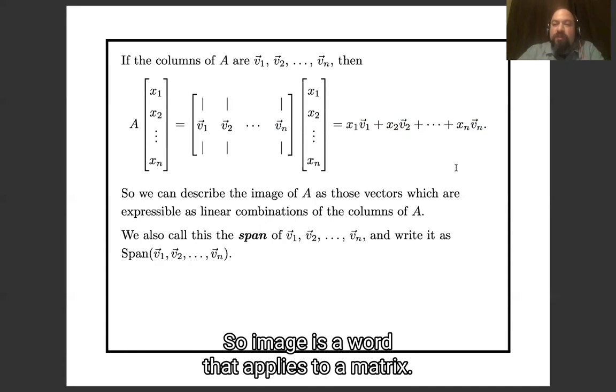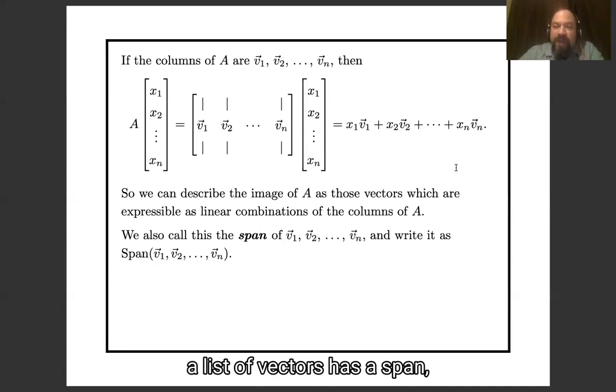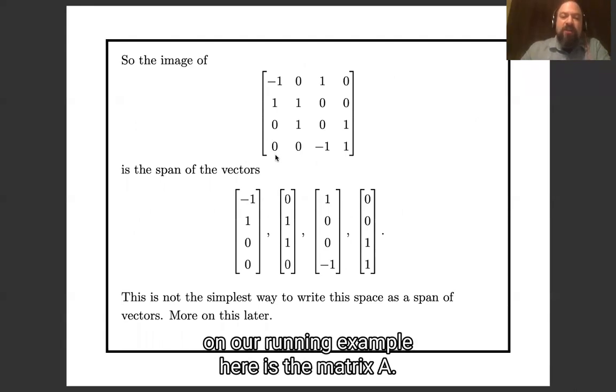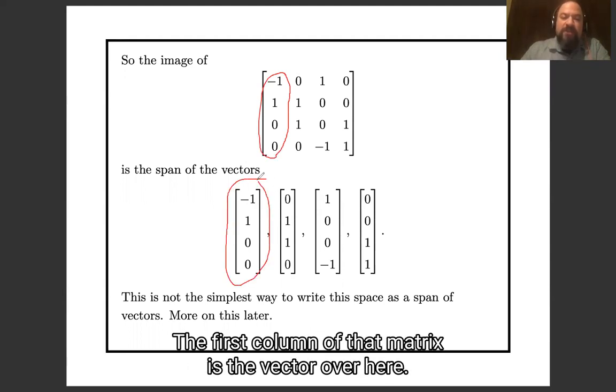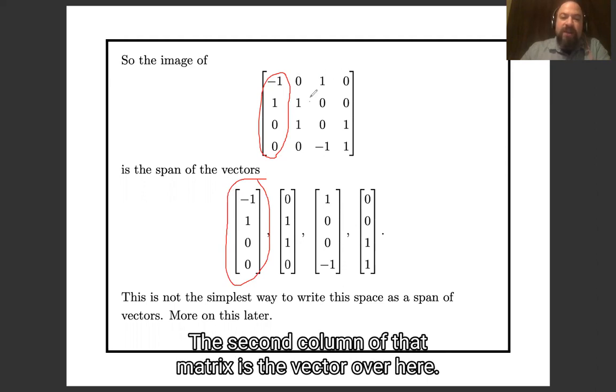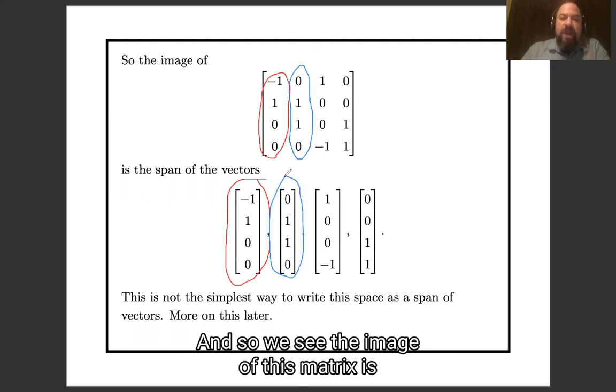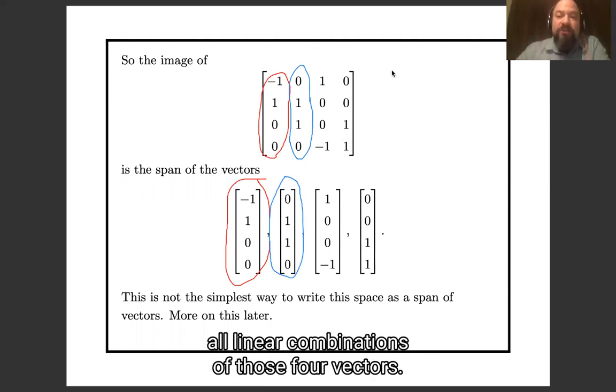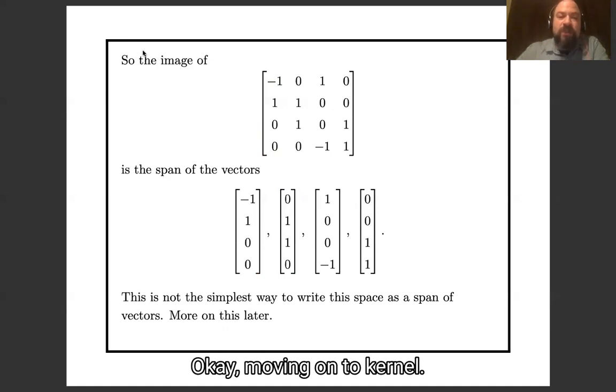So image is a word that applies to a matrix. A matrix has an image, a list of vectors has a span, but it really means the exact same thing. And so just to hammer home what these concepts mean in our running example, here is the matrix A from our running example. The first column of that matrix is the vector over here. The second column of that matrix is the vector over here. And so we see the image of this matrix is the span of these four vectors. Also we could say it's the set of all linear combinations of those four vectors.